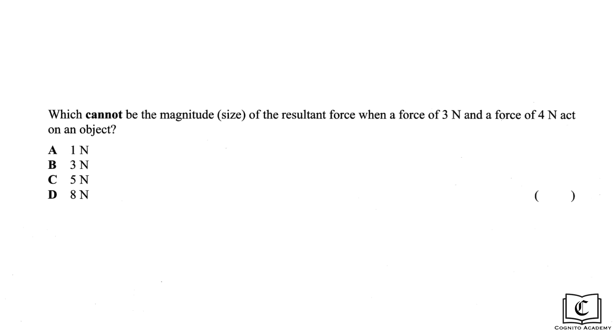Now, two things we have to note here. First, the minimum resultant force happens when the two forces are acting opposite to each other. In this case, the minimum resultant force will be of magnitude of the difference between the two forces.